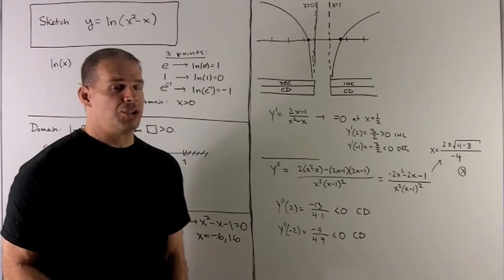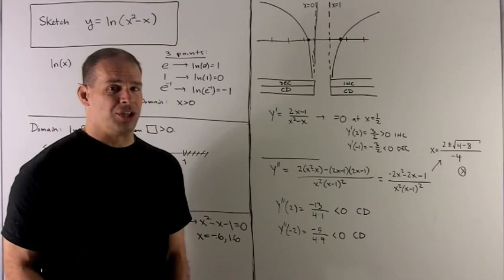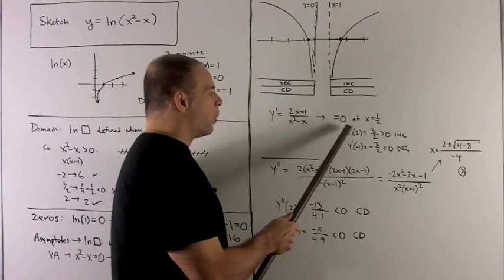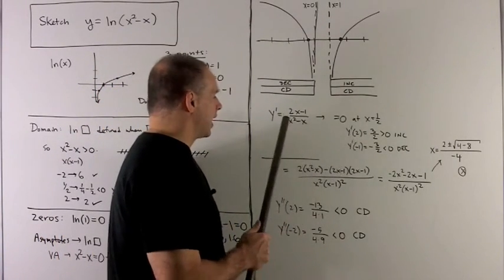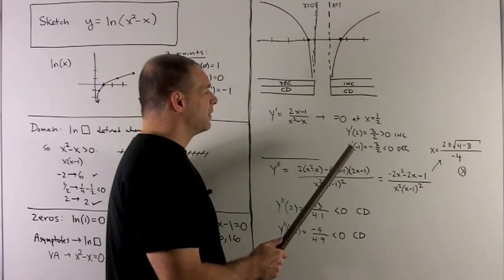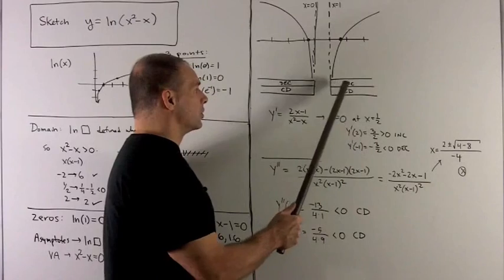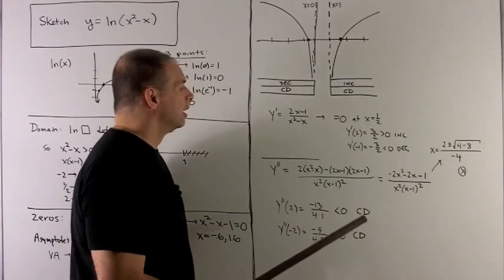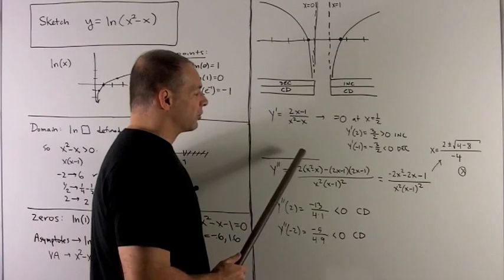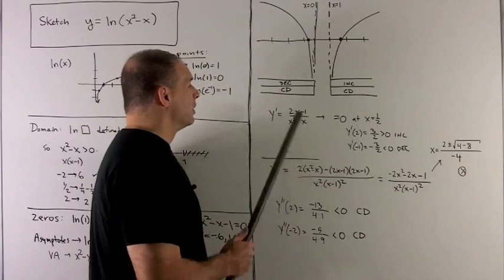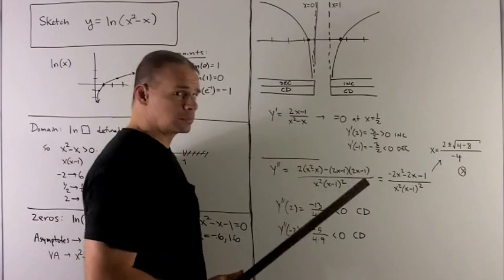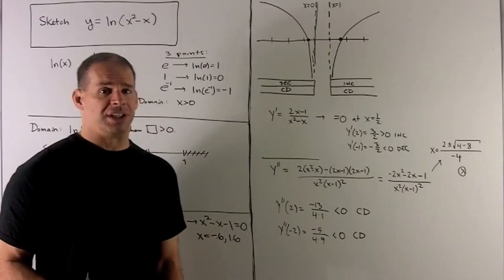What we can do though is check one point in each region of the domain to see if we're increasing or decreasing. If I check y prime at 2, we stick that into here and we notice we get 3 halves. That's positive, so we're increasing on this region here. If I put a minus 1 in, I'm going to get minus 3 halves. That's negative, so I'm decreasing on this region over here. So that takes care of increasing and decreasing.